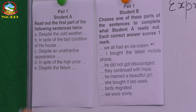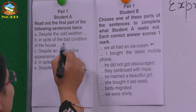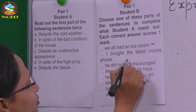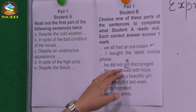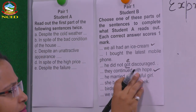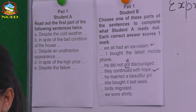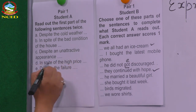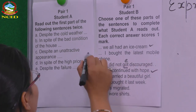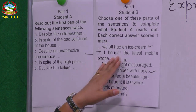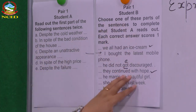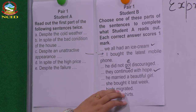'In spite of the bad condition of the house' — how can you complete this? Please also note there is a grammatical error in your book: 'did not get' should be used, not 'got.' 'They continued with hope' — in spite of the bad condition of the house, they continued with hope. They were still optimistic and didn't give up. 'Despite an unattractive appearance, I bought the latest mobile phone' — it wasn't attractive but it was the latest one, so I bought it.